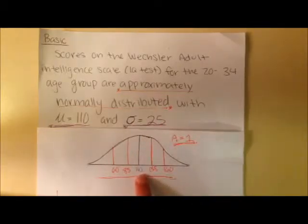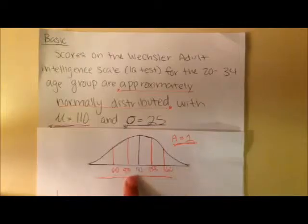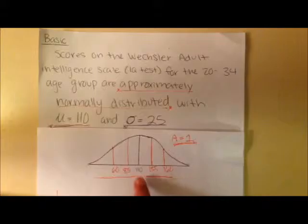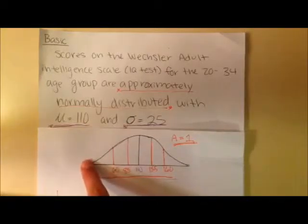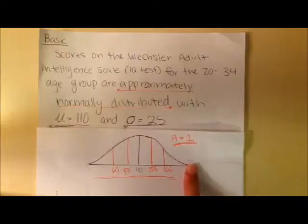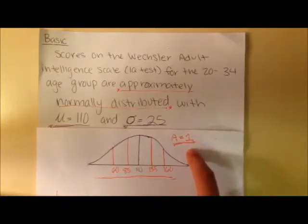And then the standard deviation is always taken in relation to the mean. So you see every 25 intervals is another standard deviation, so 135 for 25 above the mean and 85 for 25 below the mean. The last basic piece of knowledge that you need to know before going on is that under this distribution curve, the entire area is equal to 1.